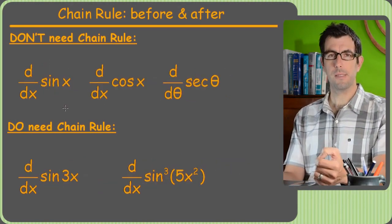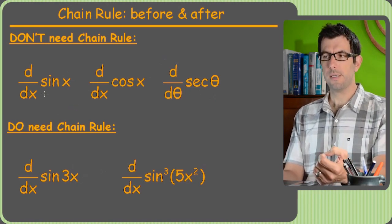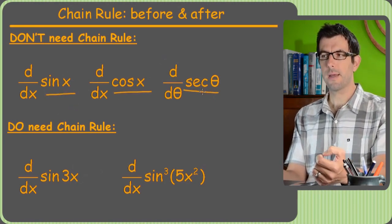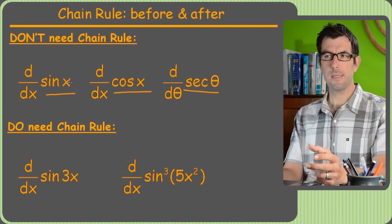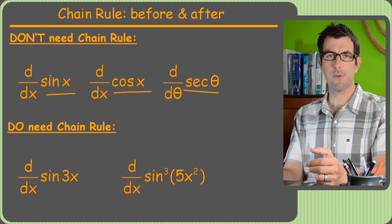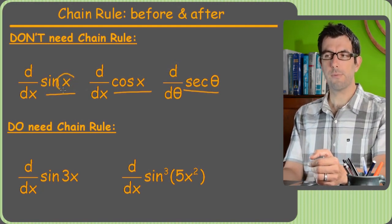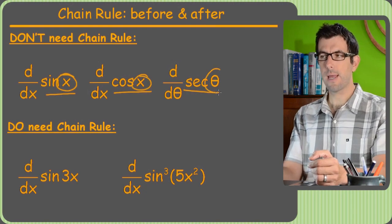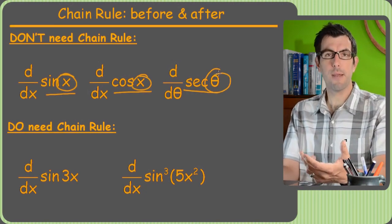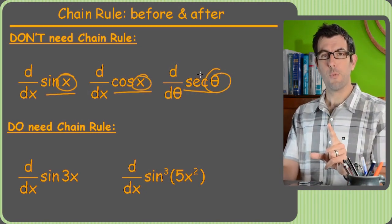Alright here's some trig formulas that did not need the chain rule. Sine x, cosine x, secant theta. The big deal is that after the sine or cosine or whatever there was always just a single letter. We got an x, we got an x, we got a theta. Could have been a y. Whatever. But there can only be one letter without the chain rule.